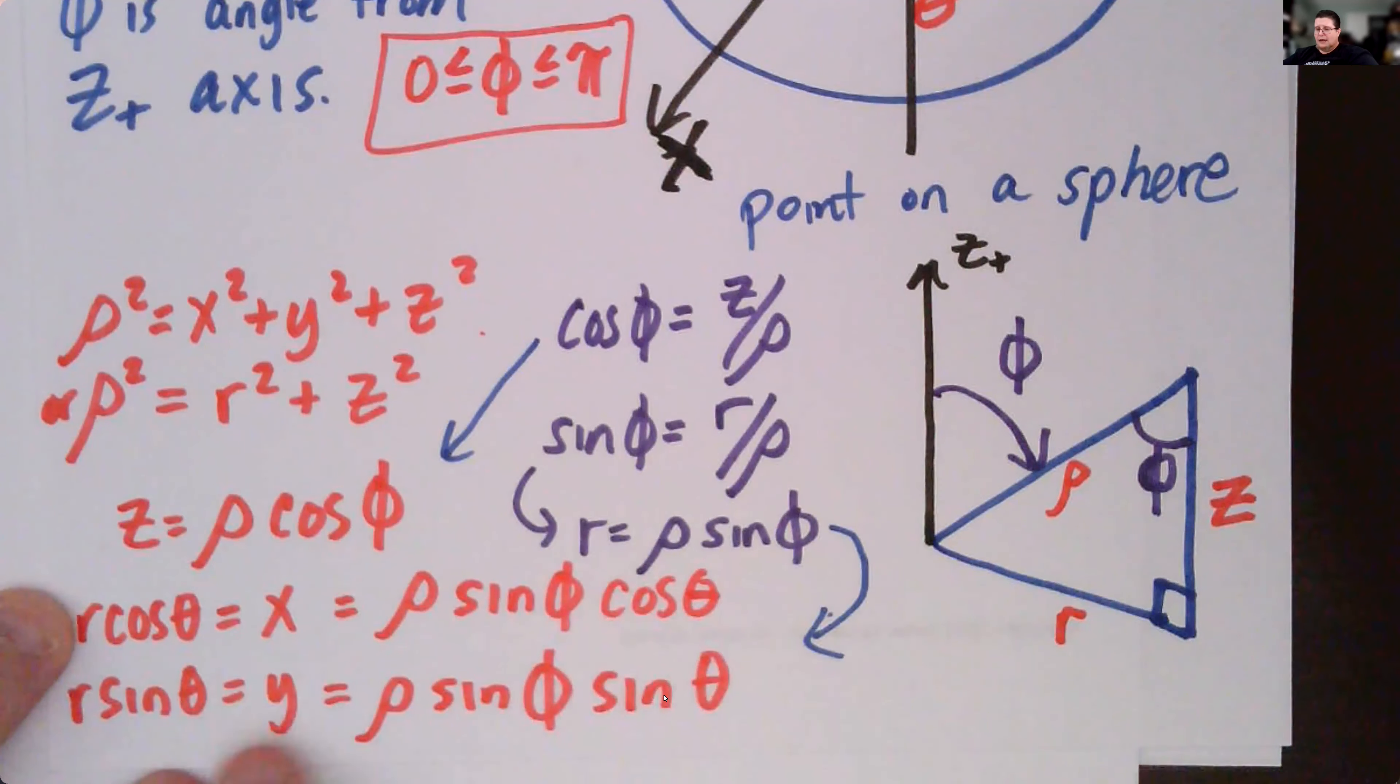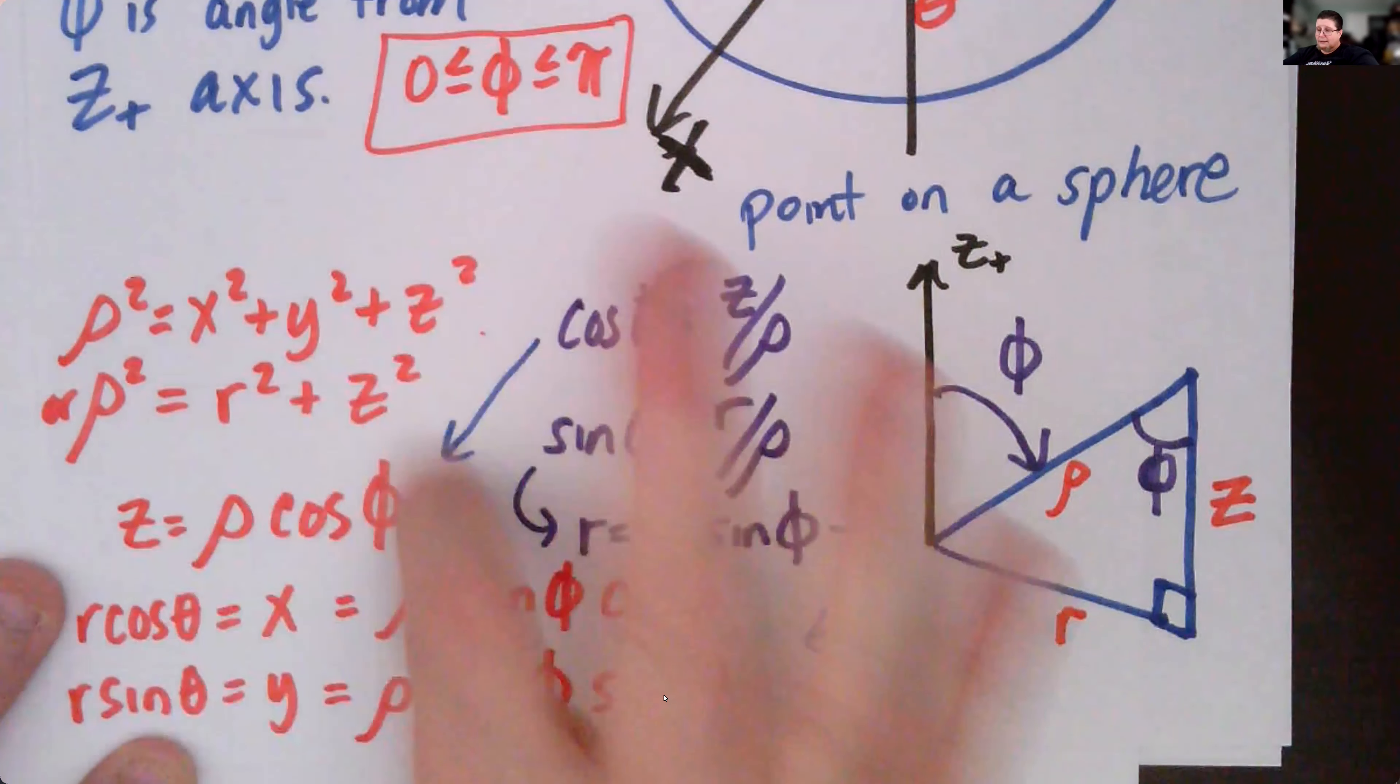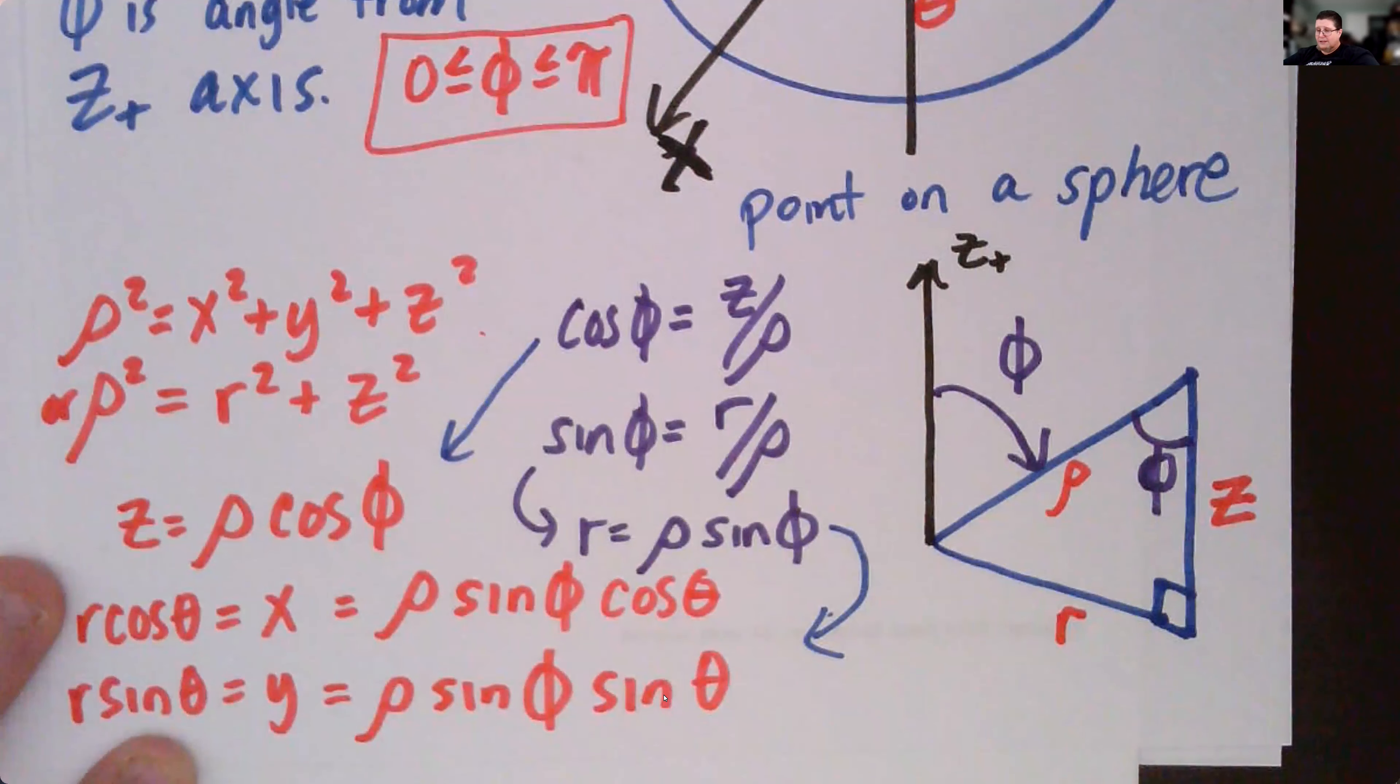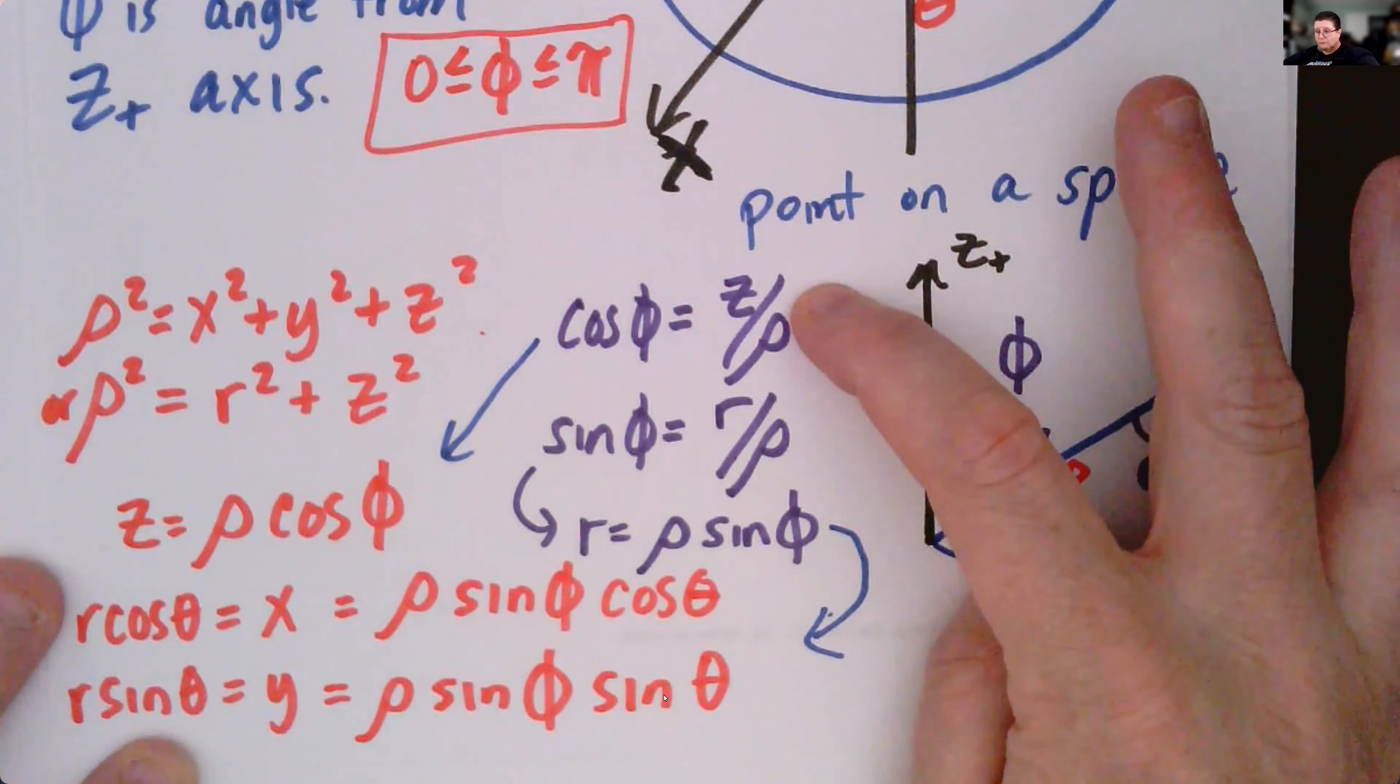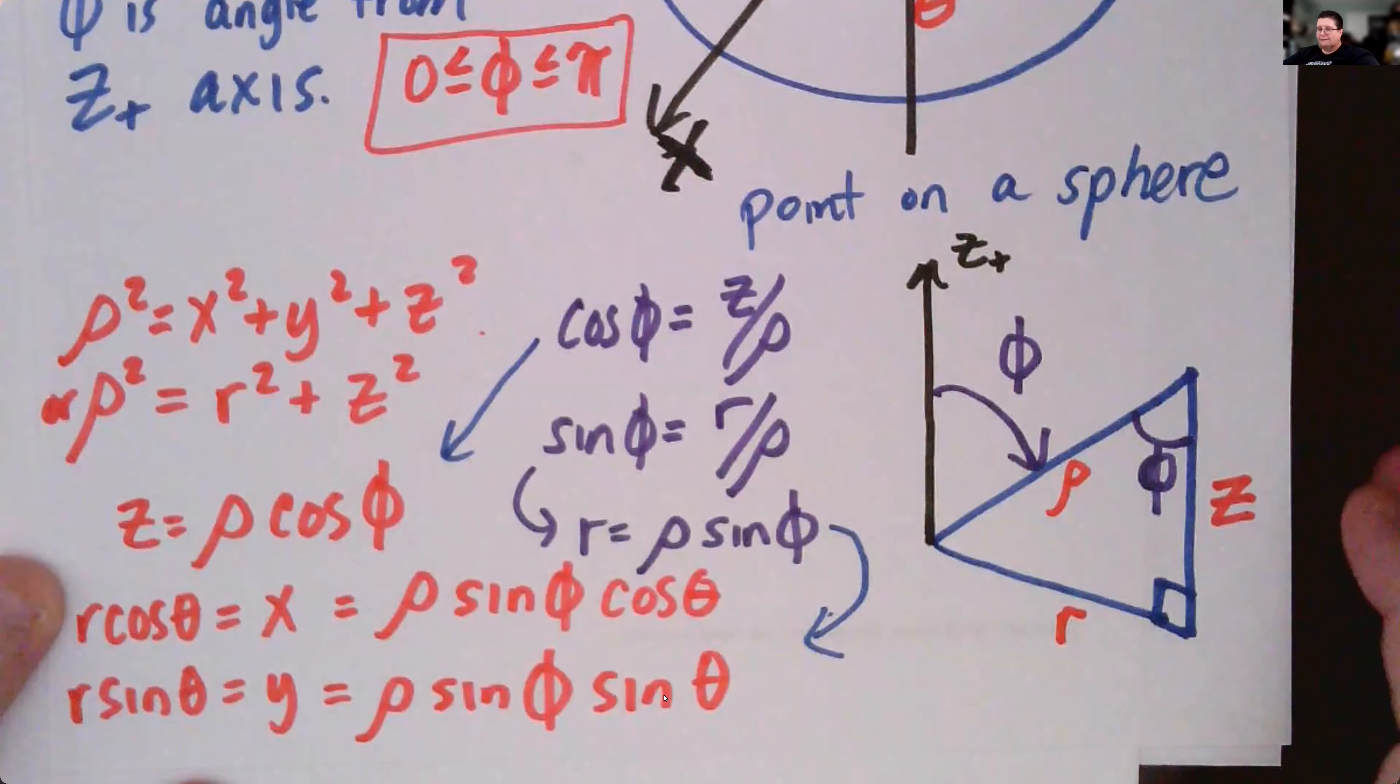And same way we've got y equals r sine theta. We substitute rho sine phi for r, we get y equals rho sine phi sine theta. z we've already got from this equation here in terms of cylindrical. So we've got x, y, and z. We've got a way to convert back and forth between them.